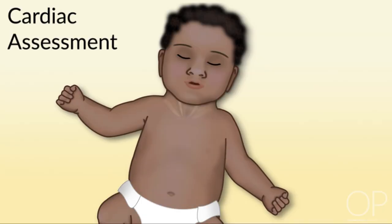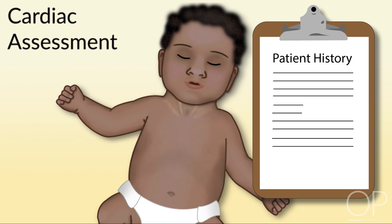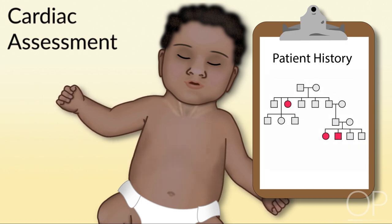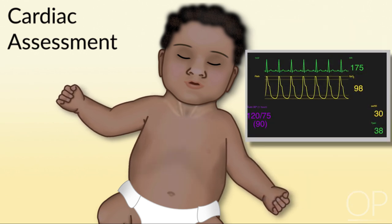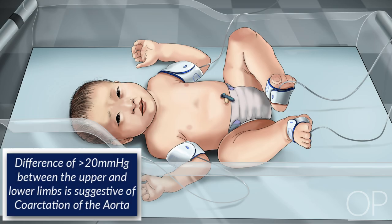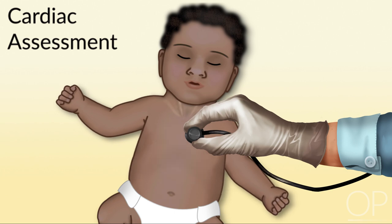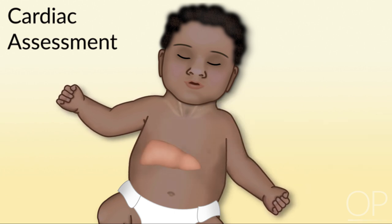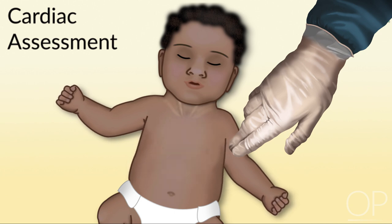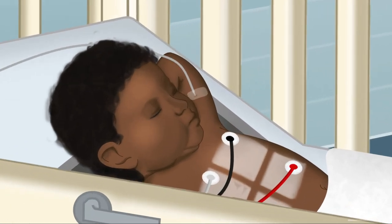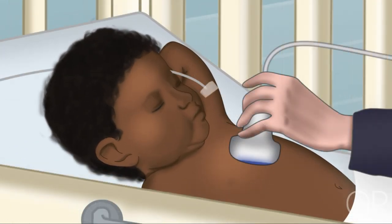On admission, a full cardiac assessment should be completed. This includes a comprehensive history identifying any prenatal diagnosis or significant birth and genetic history. A complete set of vital signs should be done as a baseline, and blood pressures in all four extremities should be measured to evaluate for any gradient within the aorta. The physical exam includes evaluation of general color, body temperature, heart sounds, and the presence of any murmurs. Assessment of the liver indicates if there is fluid overload on the right side of the heart, and the quality and strength of pulses. Diagnostic tests should include a chest radiograph and electrocardiogram; other tests may include an echocardiogram or cardiac catheterization.